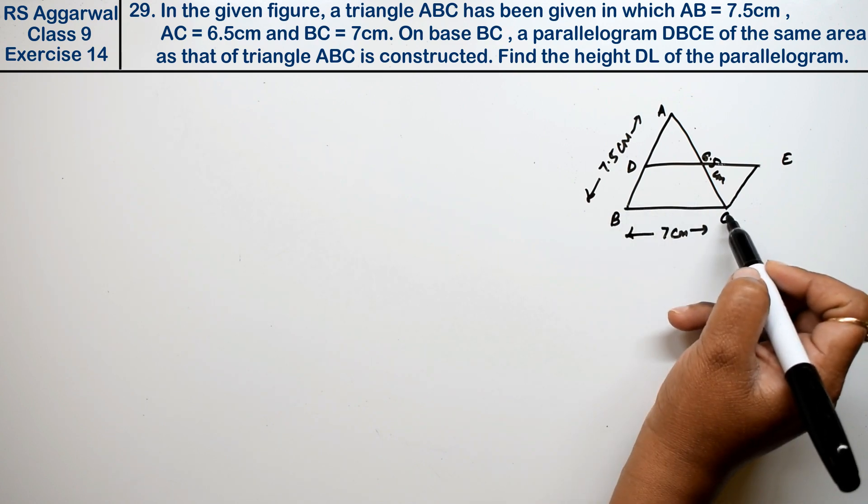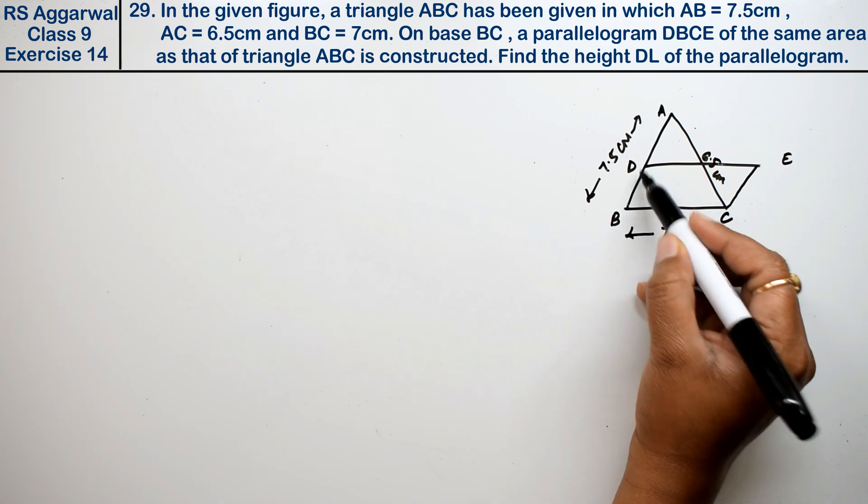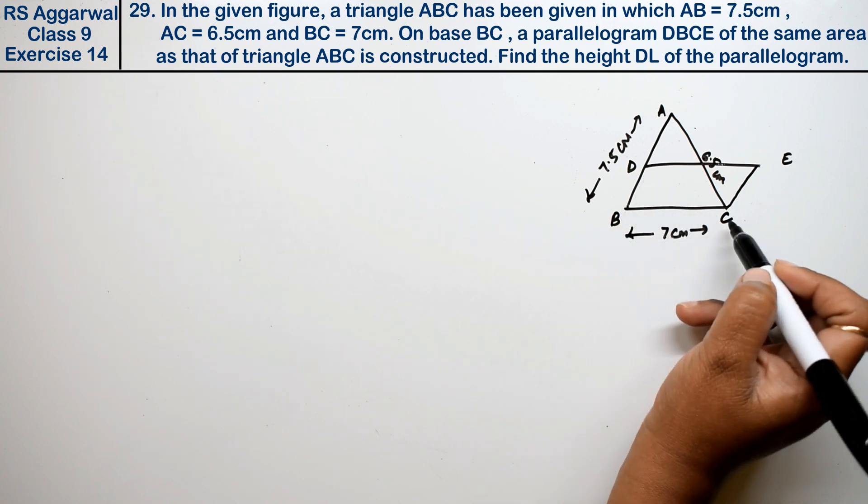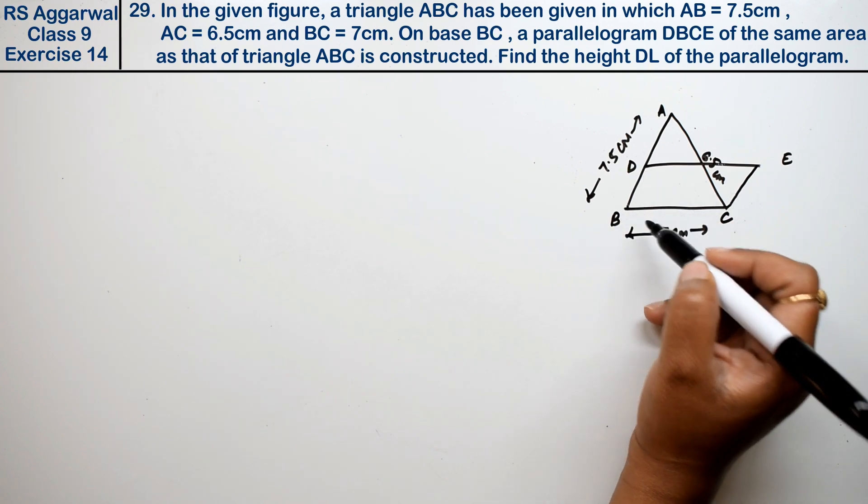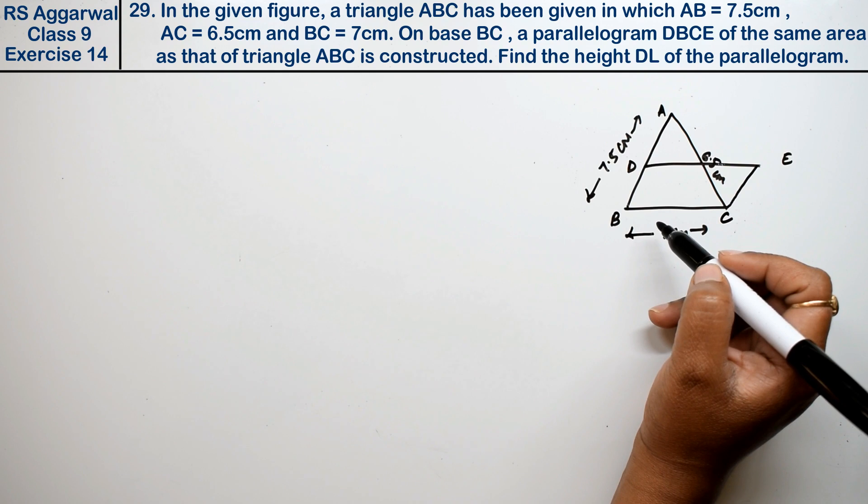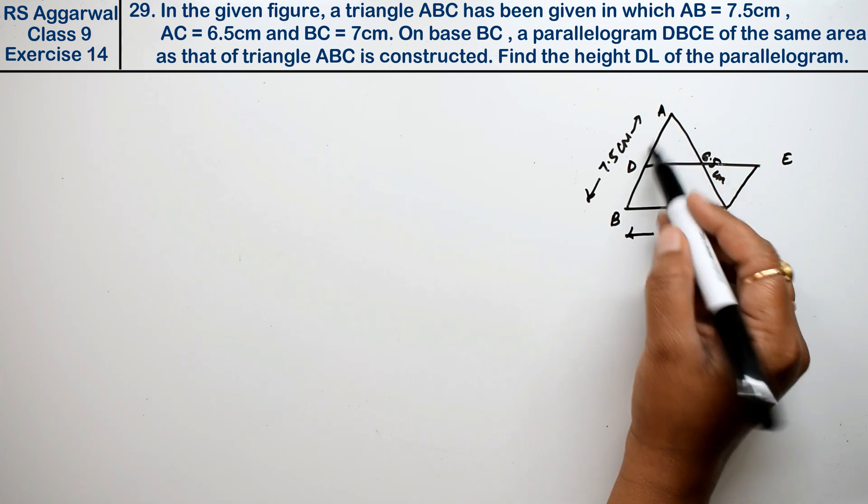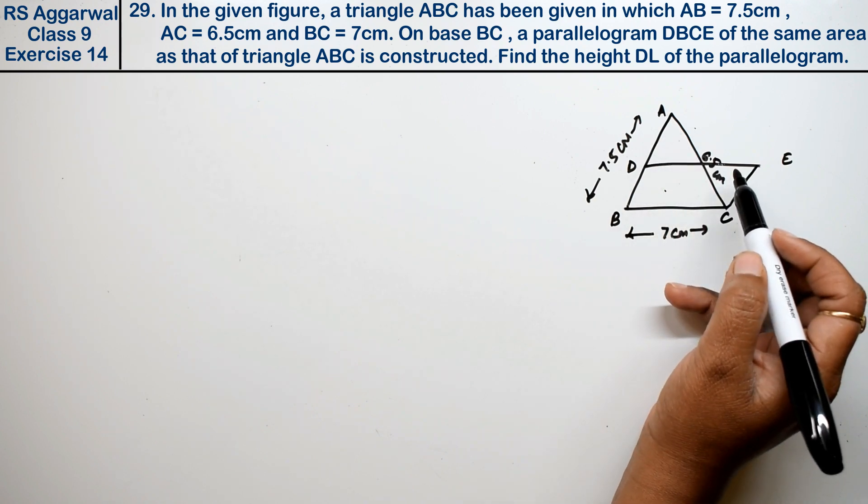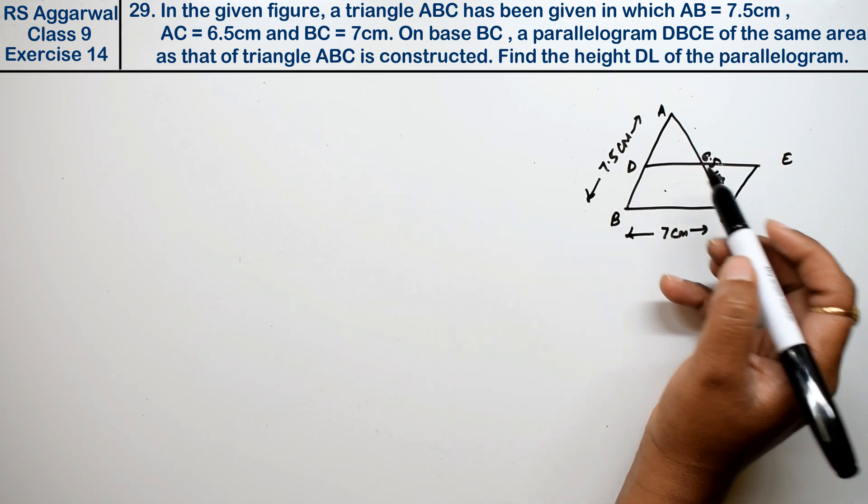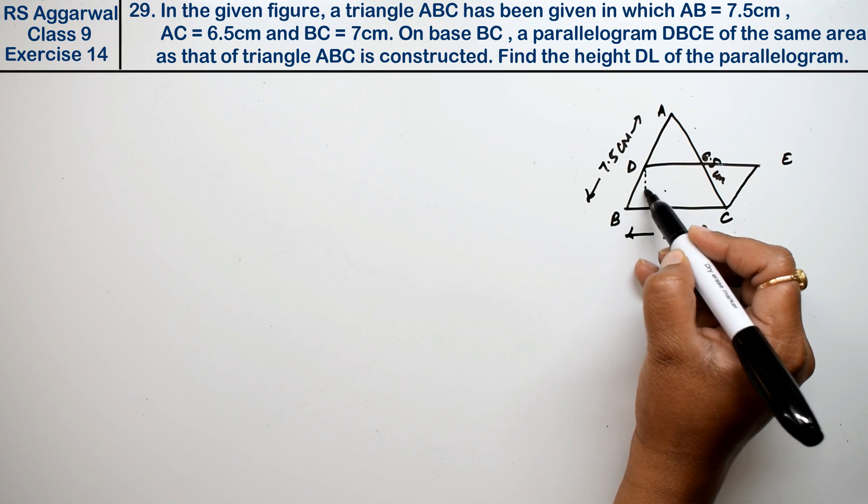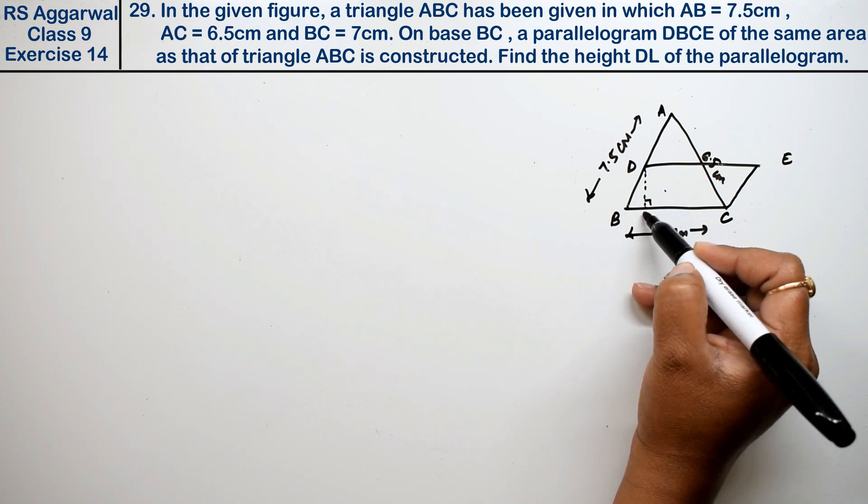On the base BC, a parallelogram DBCE of the same area as that of triangle ABC is constructed. We need to find the height DL, which is the height of the parallelogram.